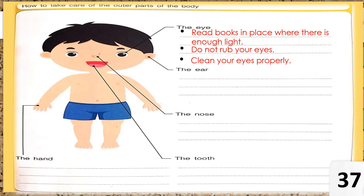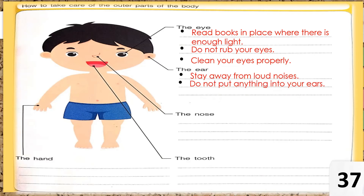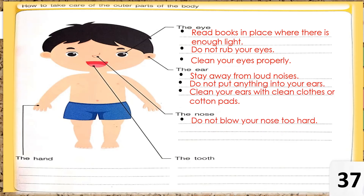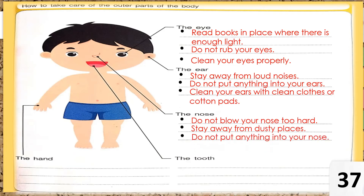For the ear, give three ways: stay away from loud noises, do not put anything in your ears, and clean your ears with clean cloth or cotton pads. For the nose: do not blow your nose too hard, stay away from dusty places, and do not put anything in your nose.